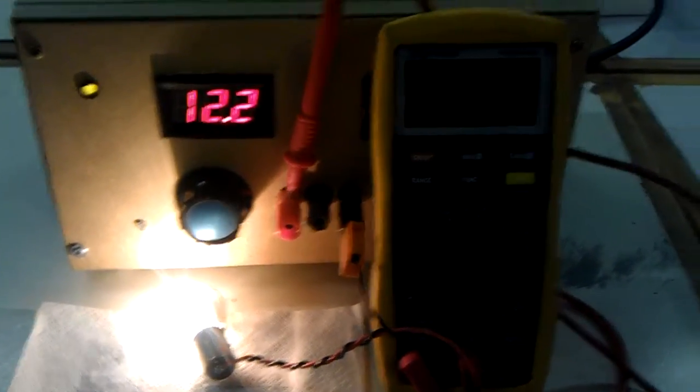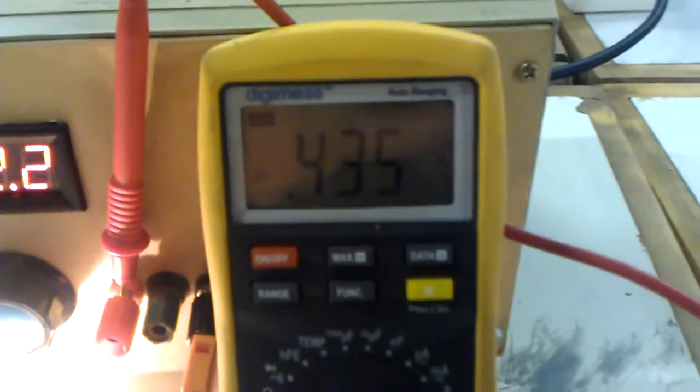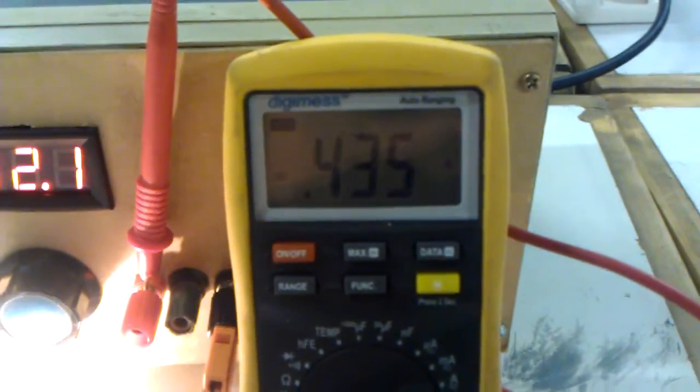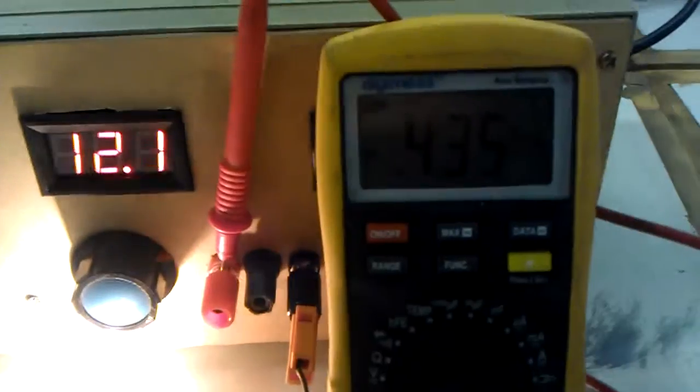We'll see that the light bulb is now pretty bright, and the current meter is now measuring 435 milliamps. And if we do our Ohm's law, that works out at about 5 watts on the bulb.